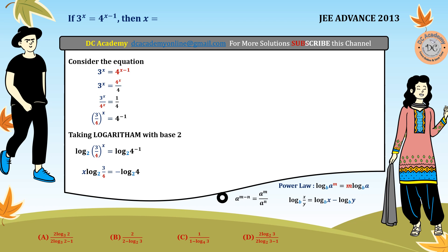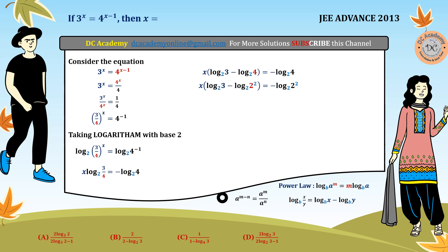We recall the quotient property: log(x/y) equals log x minus log y. So log(3/4) becomes log 3 minus log 4. Since the base is 2, we write 4 as 2 squared. Applying the power law again, the expression simplifies to x times (log 3 minus 2·log 2) equals minus 2·log 2.